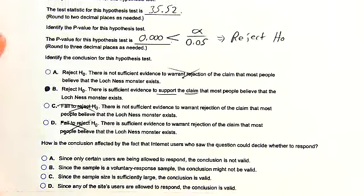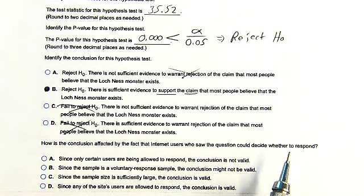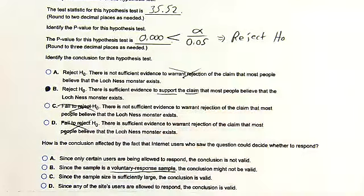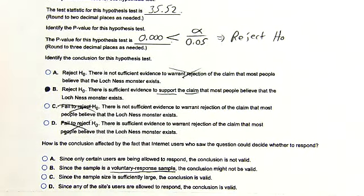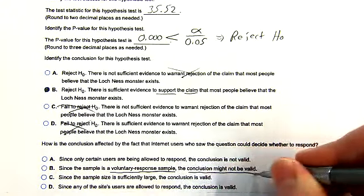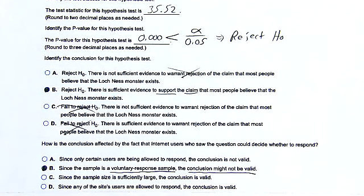How is the conclusion affected by the fact that internet users who saw the question could decide whether to respond? This is a classic example of a voluntary response sample. Voluntary response samples are a very bad way to get information, so the conclusion is probably not valid — you can do the math, but it might be garbage.